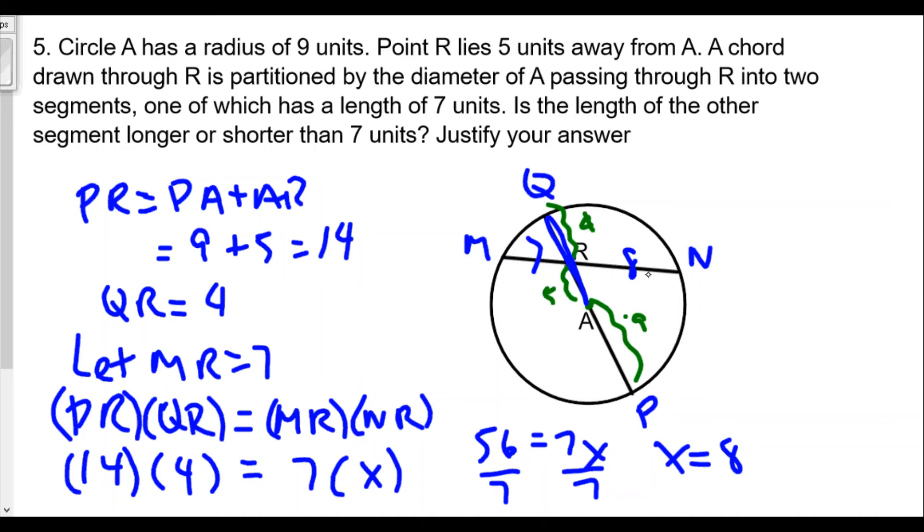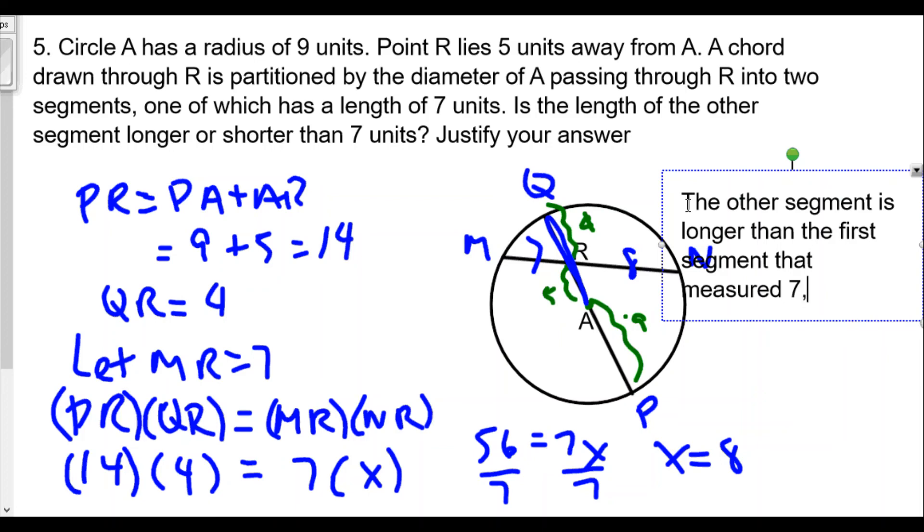If we take 56 divided by seven, we should get eight. So x equals eight, a nice number. Our answer is the other segment is longer than the first segment that measured seven.